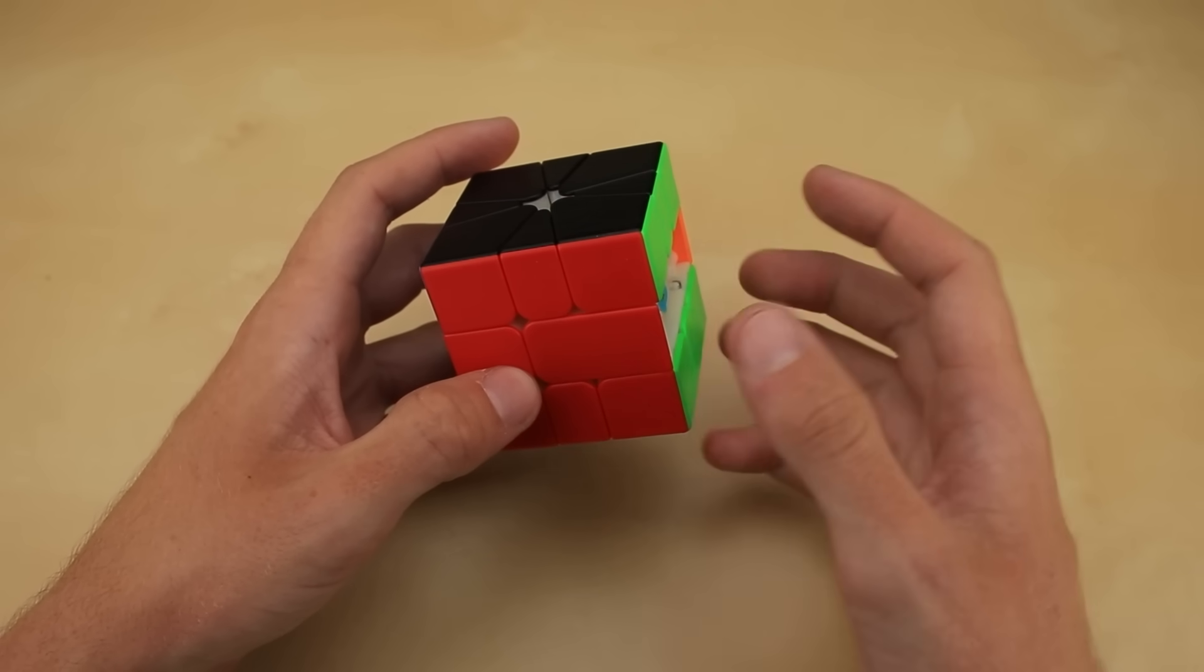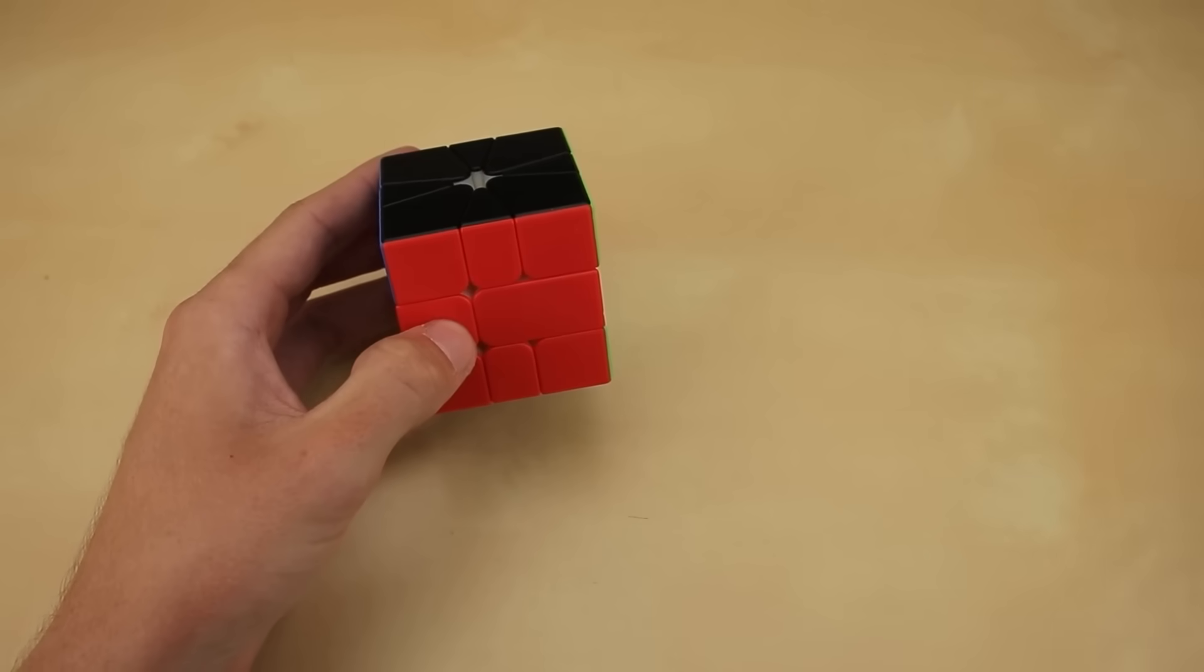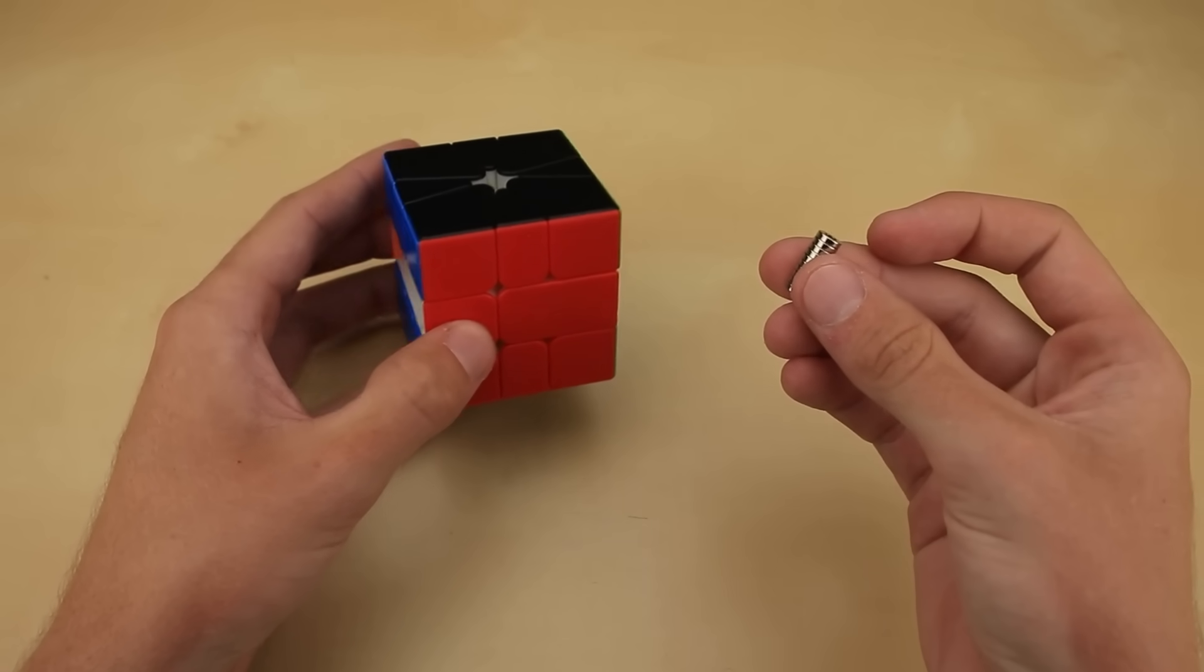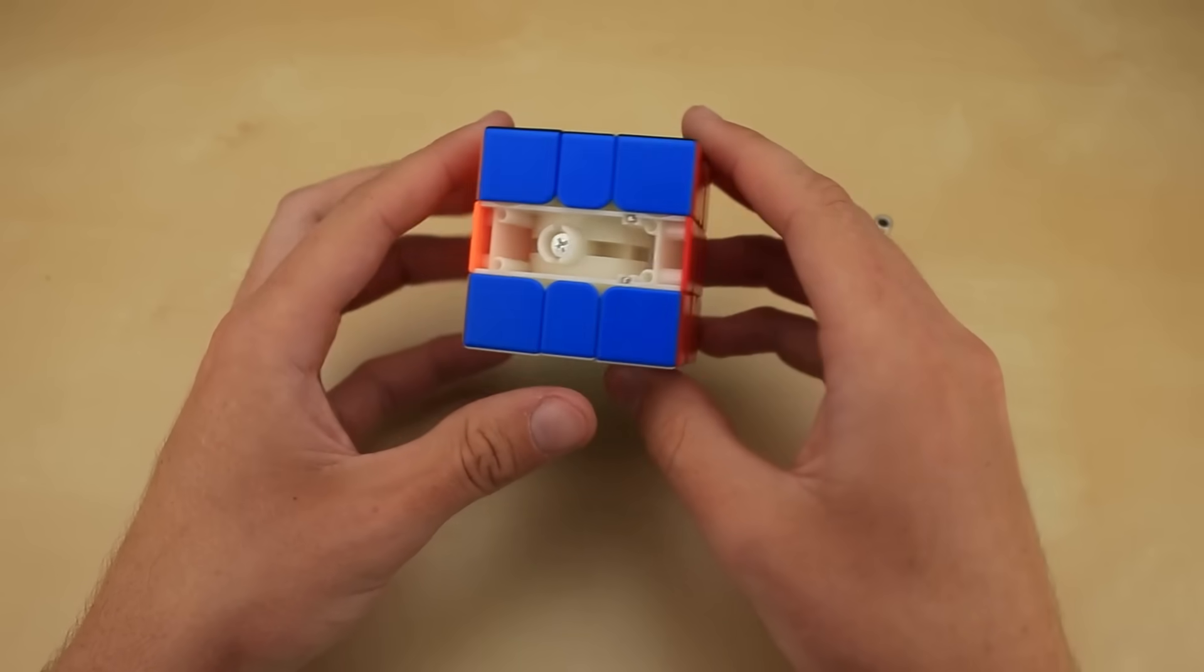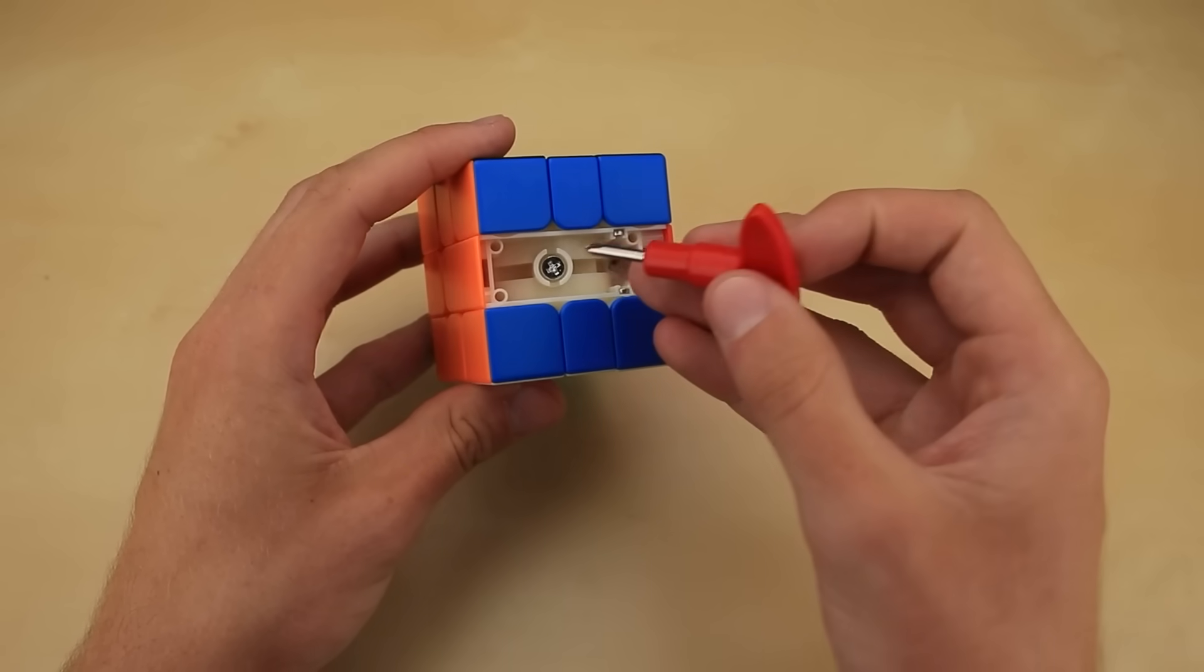I did find one website that sold them in the UK, and surprisingly, the shipping was actually pretty reasonable and pretty fast. So I ended up with these 10 magnets shipped to the US for under $10 in about a week. Not too bad. Now I guess the first step of maglevifying this cube is to unscrew the screw. So let's use the included screwdriver and see what happens.